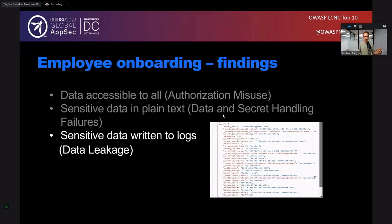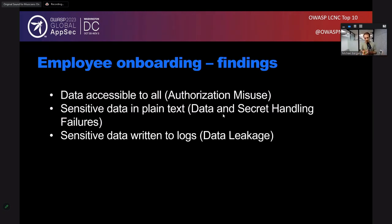You can see on screen the social security number and everything that was used in the intake form. This data has leaked to the logs of the specific automation, and that automation was shared with the entire HR team. So now the entire HR team has access to the sensitive data returned in the logs. This was a simple application, but we've seen three different findings on that specific application — and you can see under quotes the categories where these fall.